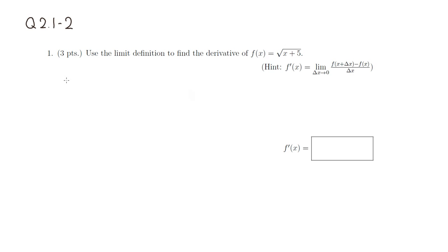We know that f'(x) is equal to the limit as Δx approaches 0. Then we have this difference quotient here. So we have f(x + Δx), which means every time we see x, we're going to put x + Δx instead. So we have the square root of x + Δx + 5,